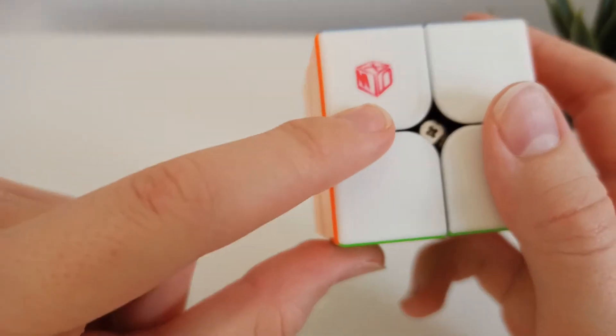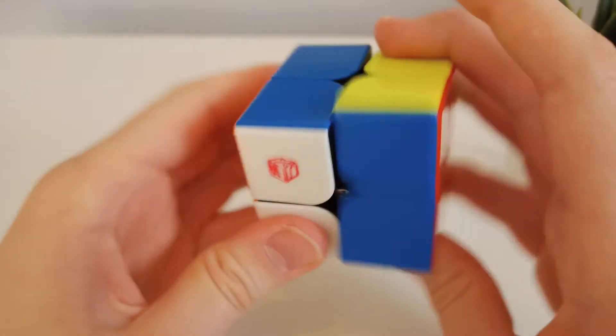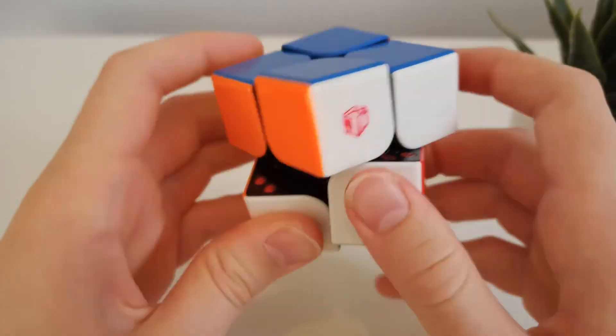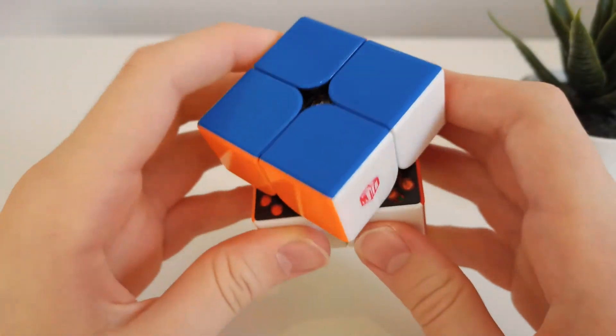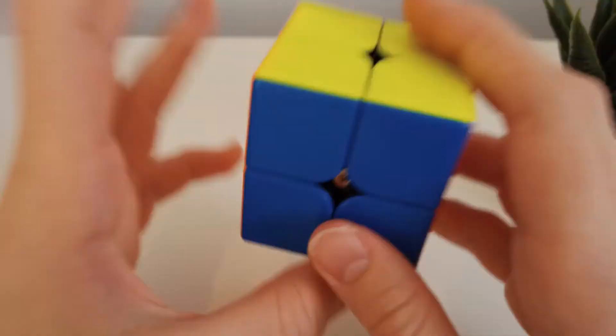The cube I use for this is the X-Man Designs Flair 2x2M. J-Pone says the corner cutting was whack and I agree out of the box. It was pretty whack. The corner cutting is honestly not great, but after some break in, some lubrication, I found the cube is really good.